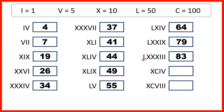LXXXIII is 83, because L is 50, and X is 10, and if we have 50 and then 3 tens, we have 80, and then 3 ones is 3. XCIV is 94, because XC is 10 before 100, so that's 90, and IV is 1 before 5, so that's 4.